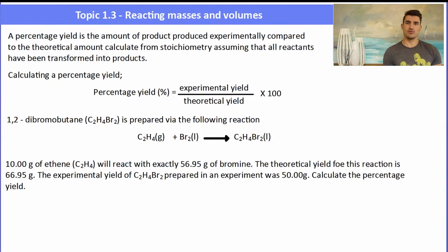Percentage yield is the amount of product formed experimentally compared to the amount that we could theoretically get if we assume that all of the reactants turn to products using stoichiometry. The percentage yield is the experimental yield - how much we collect from our experiment - divided by the theoretical yield, which we use stoichiometry to calculate, then we multiply it by 100 to get it to a percentage.